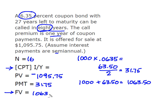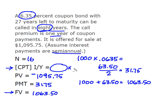Remember that when we calculate I/Y, we're expressing it semi-annually, but yield to call is expressed as an annual rate, so we're going to multiply whatever we get by 2.